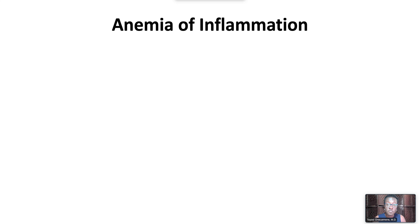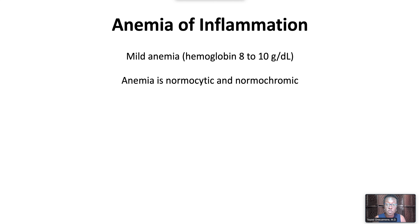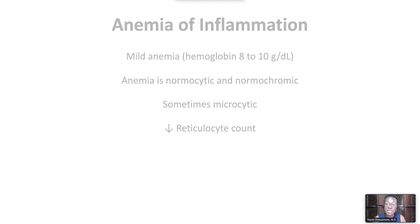Anemia of inflammation typically presents with mild anemia, with a hemoglobin in the range of 8 to 10 grams per deciliter. The anemia is normocytic and normochromic, but over time can become microcytic. The reticulocyte count is typically low for the degree of anemia.